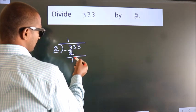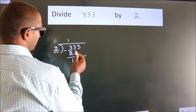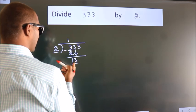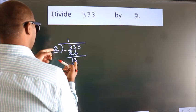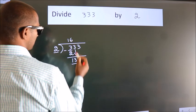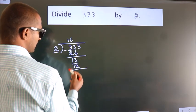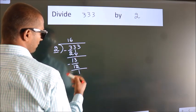After this, bring down the beside number. So, 3 down. So, 13. A number close to 13 in the 2 table is 2, 6, 12. Now, we subtract. We get 1.